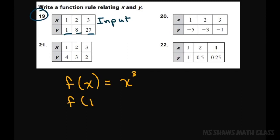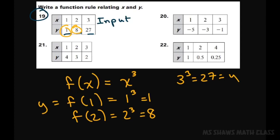So f of 1 would equal 1 cubed which equals 1. Remember this is your Y, which is what we have. f of 2 would equal 2 cubed which equals 8. And so there's your 8, and then also 3 cubed equals 27, which would also be your Y.